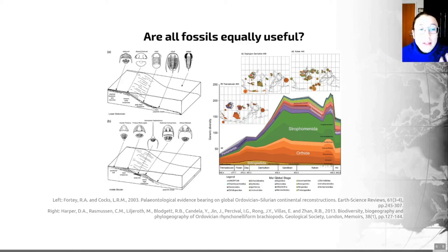those will have a distribution that's controlled by the movement and the temperature of water masses. As such, they may be of latitudinal significance, i.e. we find them in belts, but they will usually not be related to particular terrains. So a terrain being a fragment or block of continental crust with its own individual geological history.